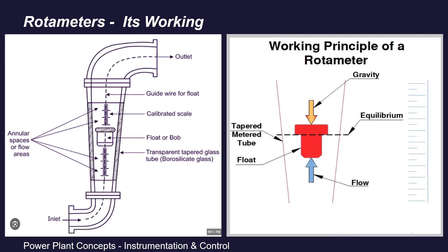Coming to the working of rotameters: the tube is placed vertically such that the narrow cross-section side is at the bottom and the wider cross-section is at the top. The entry of the fluid is from the bottom and exit is from the top side. This fluid entering from the bottom inlet strikes with the float, and due to the force exerted by this fluid —